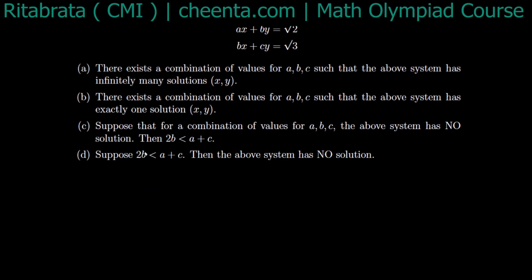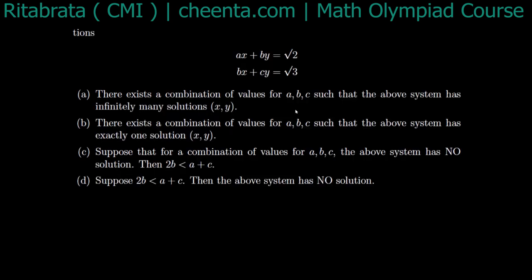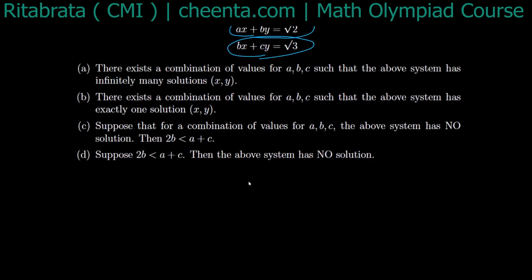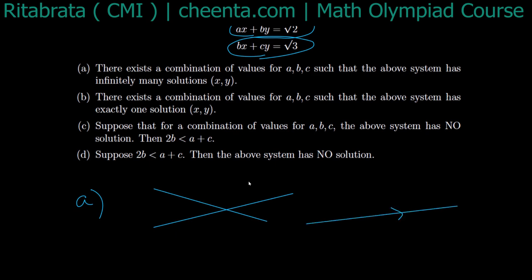We can think of this system geometrically — these two equations are both lines in R2. Two lines have infinitely many solutions if they are identical. If they have no solution, they are parallel. Otherwise, they have exactly one solution.